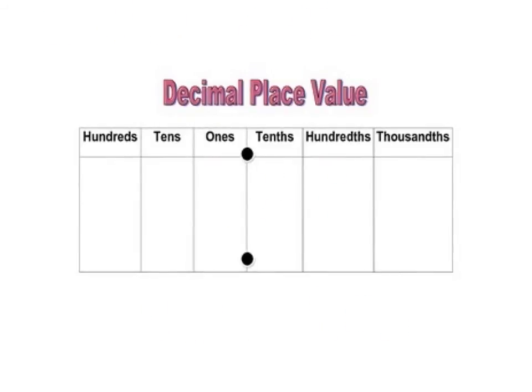It's also important to remember that when we're moving from tenths to thousandths in this direction, our numbers are actually getting smaller. It becomes one tenth of a whole, one hundredth of a whole, and one thousandth of a whole. You've heard this before in fractions: 1 over 10, 1 over 100, and 1 over 1000.